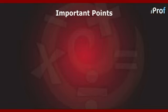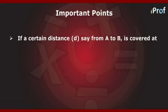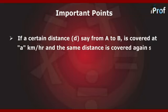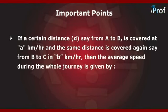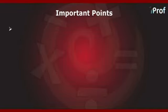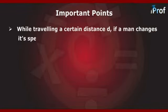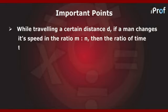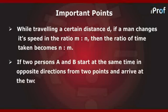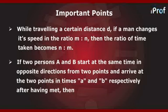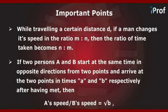Some important points related to speed: If a certain distance d from A to B is covered at a km/h and the same distance from B to C at b km/h, then the average speed equals 2ab/(a+b) km/h. While traveling a certain distance, if a man changes his speed in the ratio m:n, then the ratio of time taken becomes n:m. If two persons A and B start at the same time in opposite directions and arrive at their destinations in a and b hours respectively after having met, then speed of A / speed of B = √b / √a.